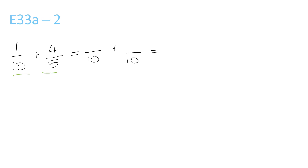We have to make these both over 10. So 1 over 10 can just stay the same because it's already over 10. But 5 times 2 is 10, so we have to do 4 times 2, which is 8. Now we have 1 plus 8 is 9 over 10.